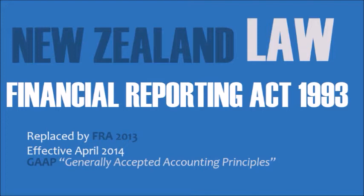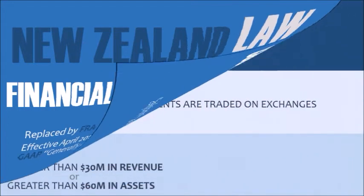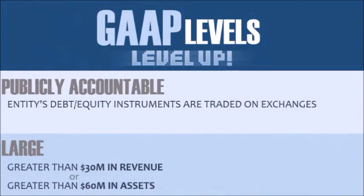This law governs the publishing of financial statements and the rules of how each business has to follow GAAP. GAAP is short for Generally Accepted Accounting Principles. Under the new FRA, only publicly accountable or large companies will have to follow GAAP. If a business does not follow GAAP, then they can still follow cash based accounting while still following tax reports. But to borrow money from banks will require GAAP.